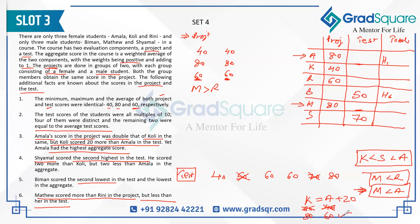With A scoring 60 in the test, one of the two 60s is taken. K then gets 80 in the test. The remaining test scores for M and R are from the unused values. Since Matthew scores less than Rini in the test, M must score 40 and R must score 50. Wait — checking: M < R, so M = 40 and R = 60? Actually the remaining values are 40 and 50; M < R means M = 40 and R = 50.